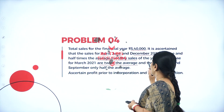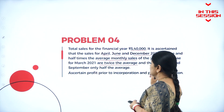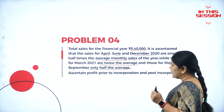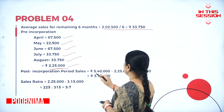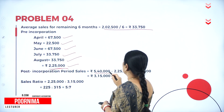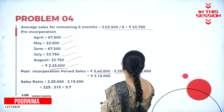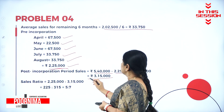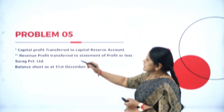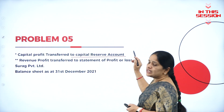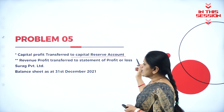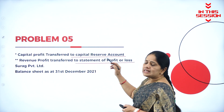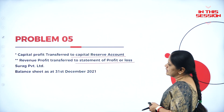The sales for March are twice the average and those for May and September are only half the average. The post-incorporation period sales equals 5,40,000 minus 2,25,000, which comes up to 3,15,000. The capital profit is to be transferred to capital reserve account and revenue profit is to be transferred to the profit and loss account of Surag Limited.